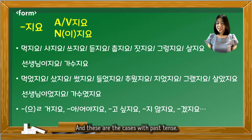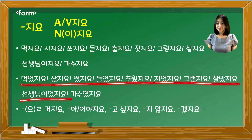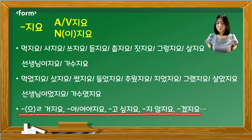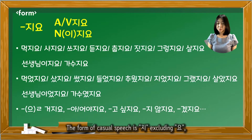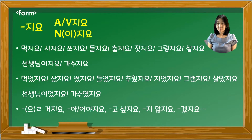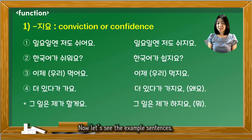And these are the cases with the past tense, and these are the ones with auxiliary words. The form of casual speech is 지, excluding 요. And if you pronounce the word quickly, it becomes just 조, which is very commonly used. Now, let's see the example sentences.